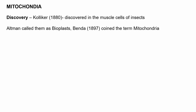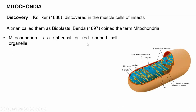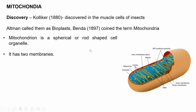Mitochondria is a plural term; for singular we use mitochondrion. A mitochondrion is a spherical or rod-shaped cell organelle and it has two membranes. To remember organelles which have two membranes, the mnemonic NAMAK is used: N stands for nucleus, M stands for mitochondria, and K stands for chloroplast. So mitochondria is one of the organelles which has two membranes.